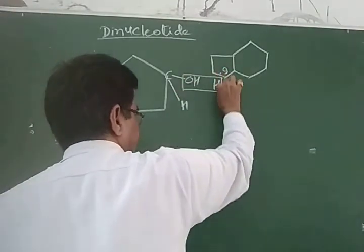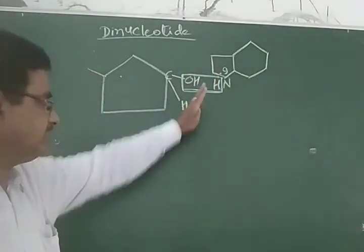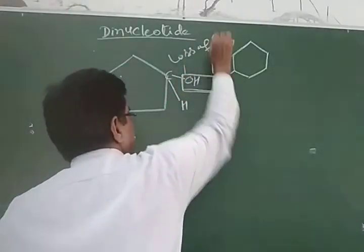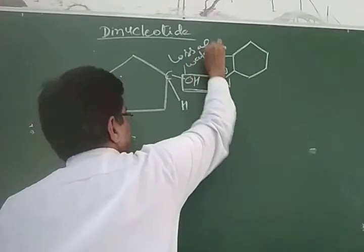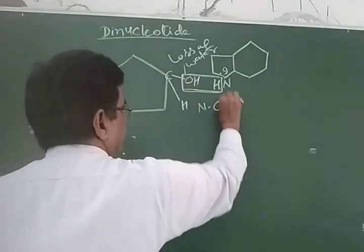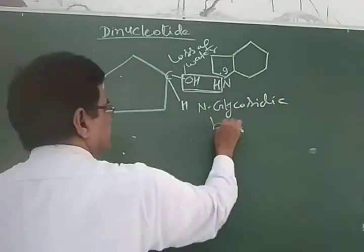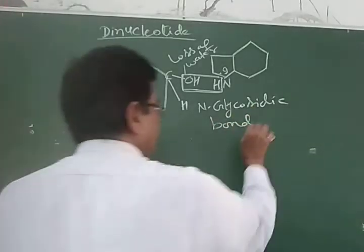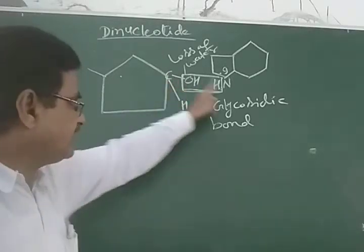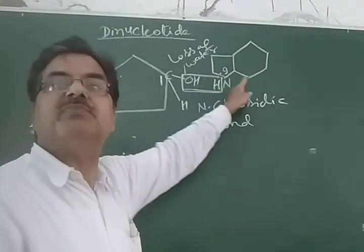This is the glycosidic bond. There is a loss of a molecule of water, forming the N-glycosidic bond or linkage. By the loss of water, there is a bond between carbon and nitrogen — the first carbon of the sugar joins with the ninth position of the purine base.